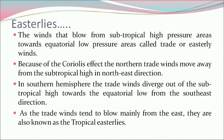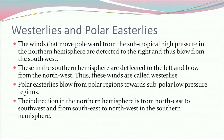Now what are westerlies and polar easterlies? The winds that move poleward from the subtropical high pressure in the northern hemisphere are deflected to the right and thus blow from the southwest. In the southern hemisphere they are deflected to the left and blow from the northwest. Thus these winds are called westerlies. Polar easterlies blow from polar regions towards subpolar low pressure regions. Their direction in the northern hemisphere is from northeast to southwest, and from southeast to northwest in the southern hemisphere.